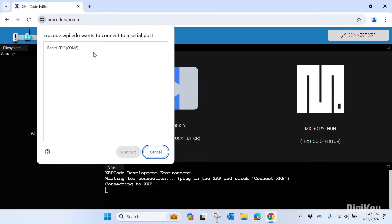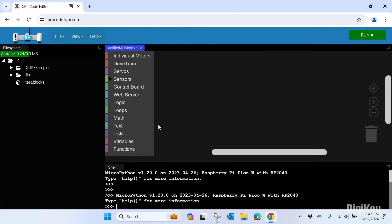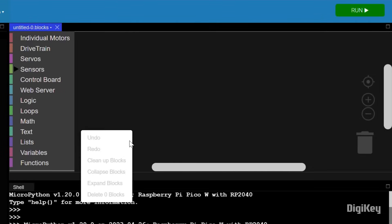In the XRP code environment, you have the option to use block coding or MicroPython text coding. Select Blockly on the left to start with block coding. Drag and drop each block to build your code.